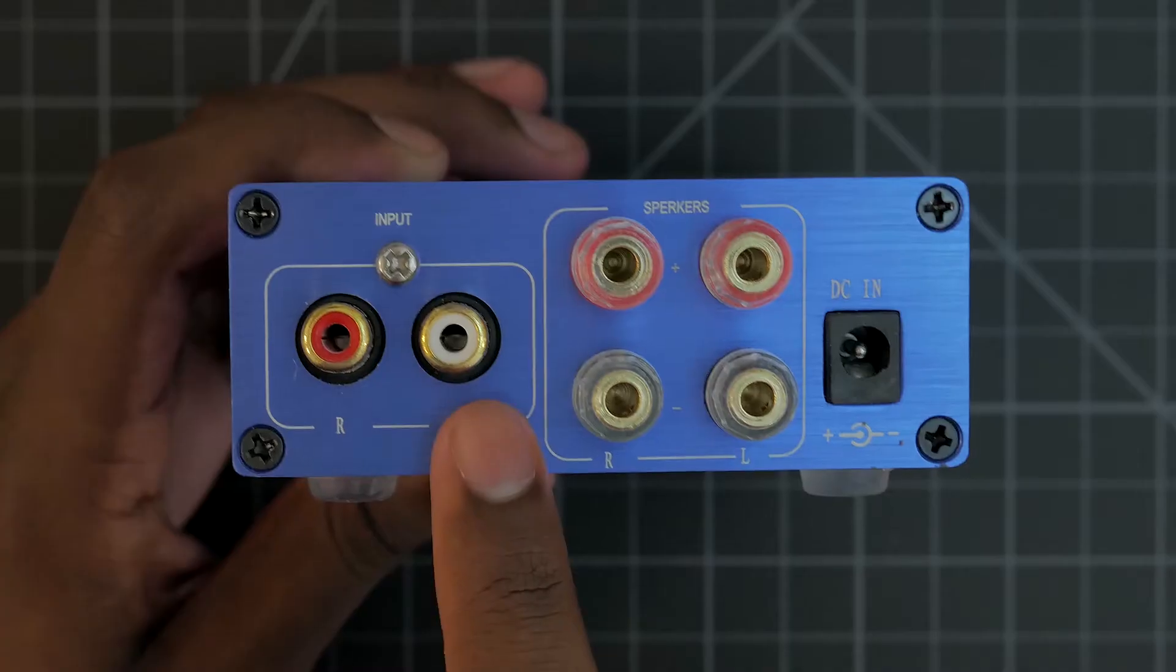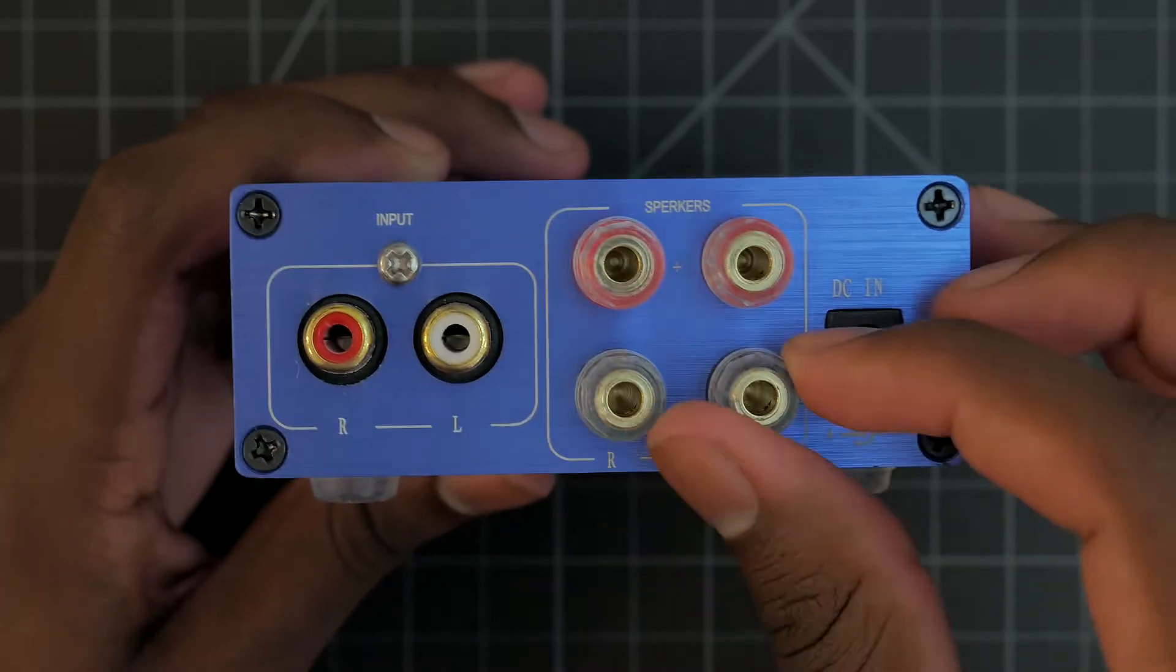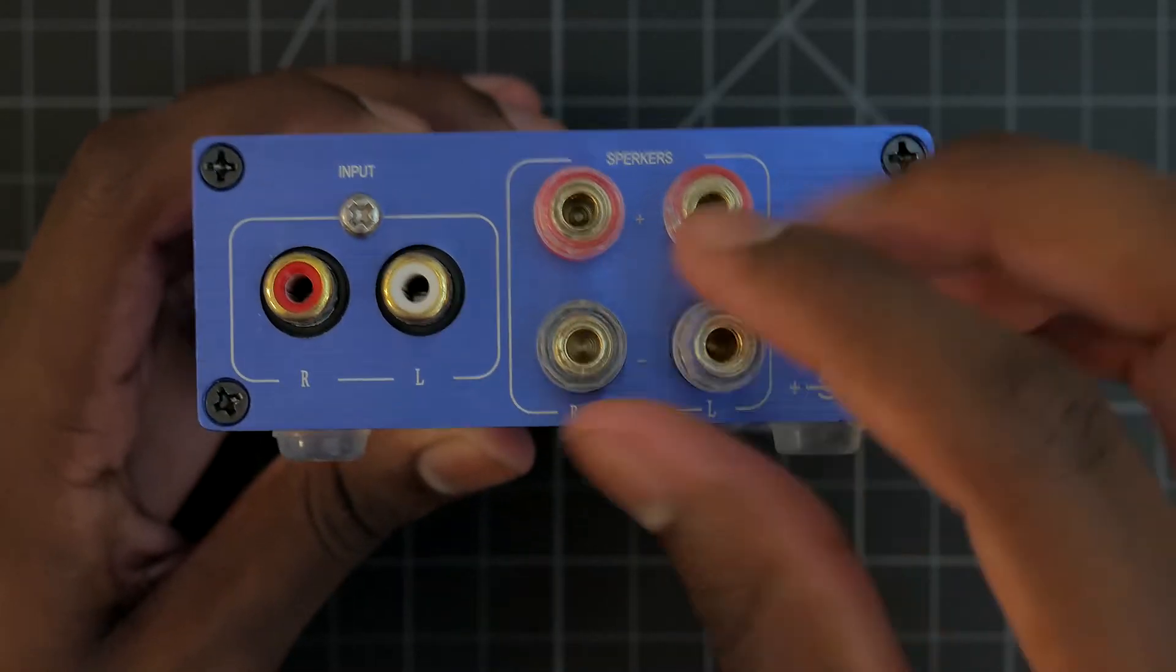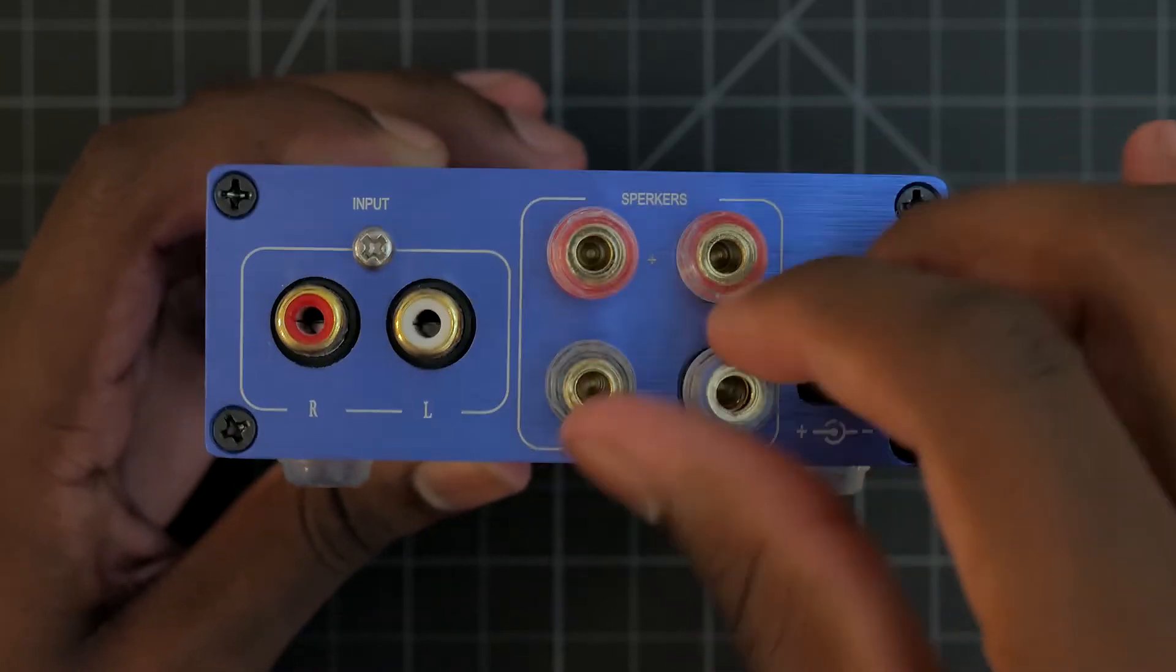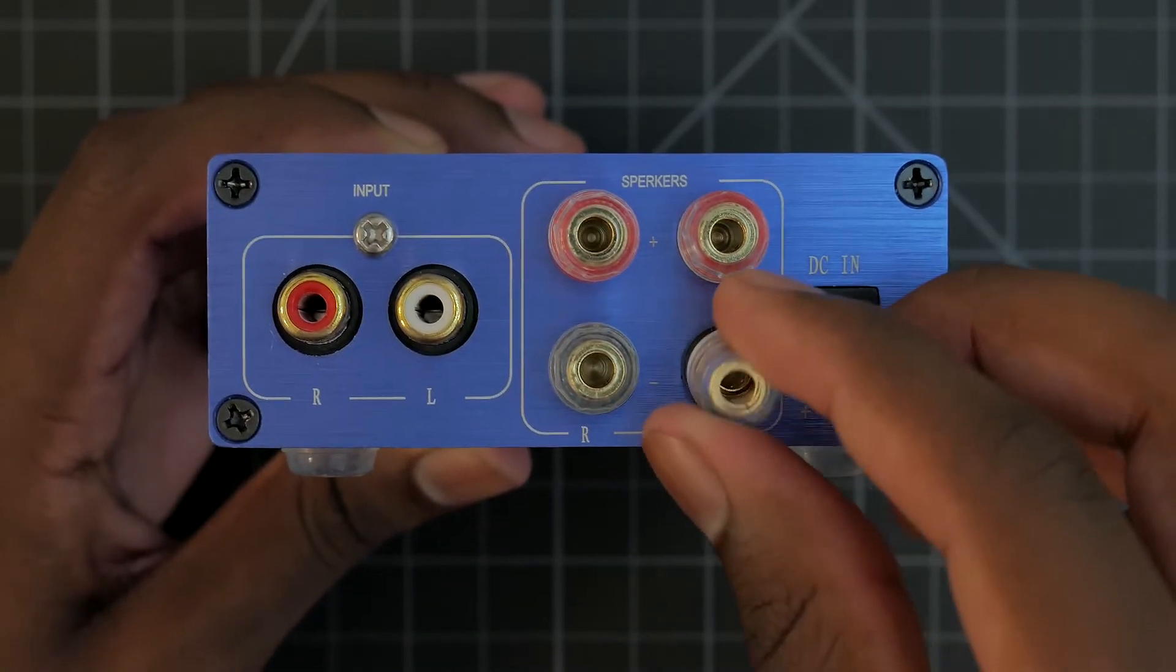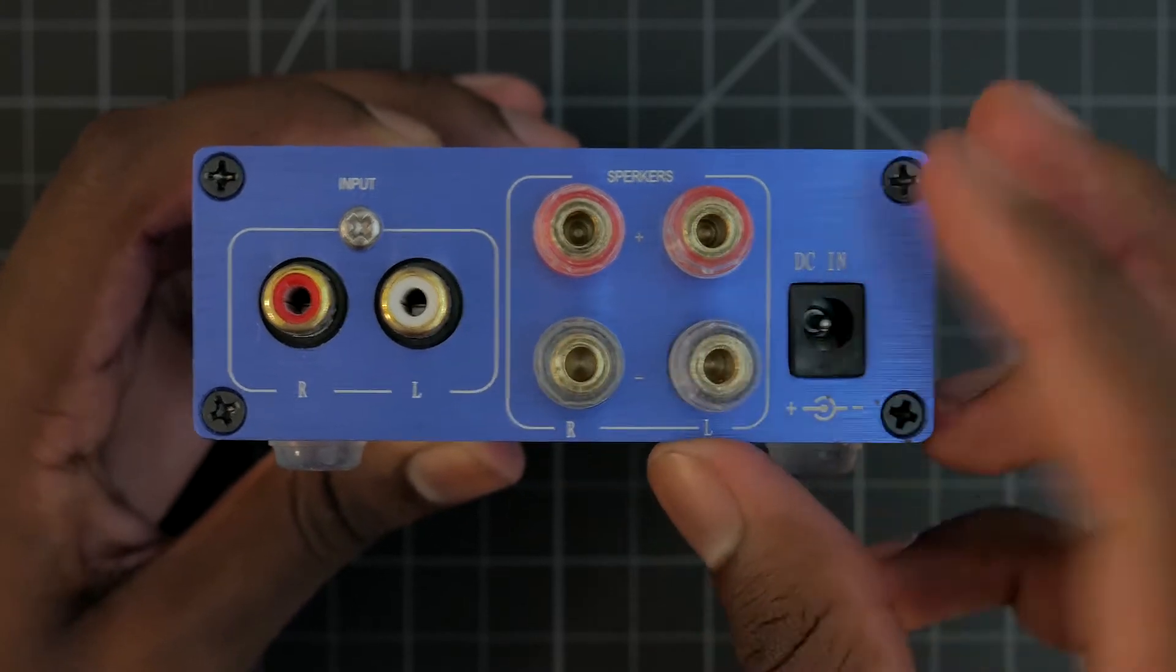I already said how you use an RCA cable for the inputs, but for the outputs you use this screw system. You unscrew the metal insulated cap, wrap the wire around the metal, and then re-screw the cap on. This is a pretty common system and it's pretty self-explanatory. It's just weird because you don't usually see it on devices this small.